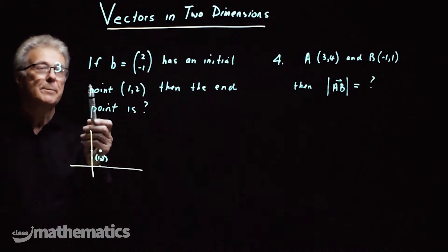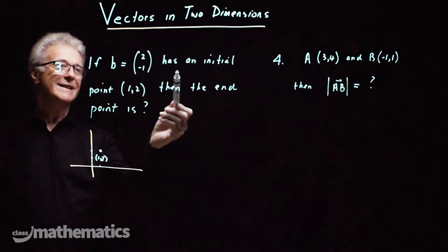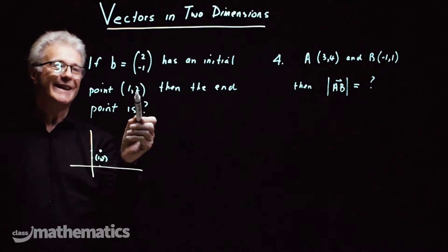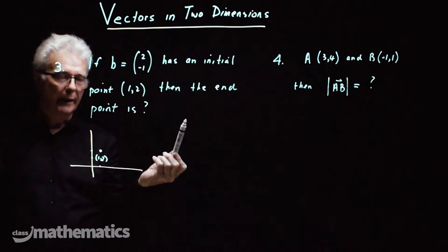Number three, if b is the column vector 2, negative 1 and initial point 1, 2, it's where it starts from, then the end point is, which one is it?